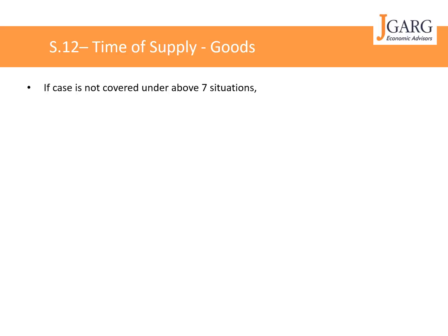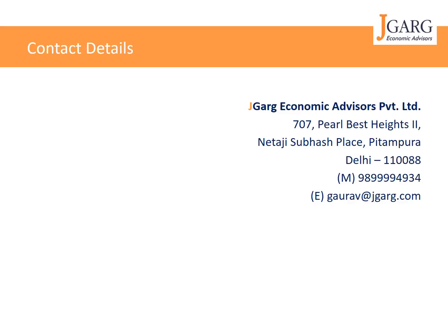In any other case not covered under the above seven situations, the time of supply is the date of periodical returns or the date of payment of tax, whichever is applicable. I hope this short presentation has helped clarify the concept of time of supply of goods. We have more presentations available on our YouTube channel on goods and service tax — keep watching them, and please feel free to share any feedback. Thank you.